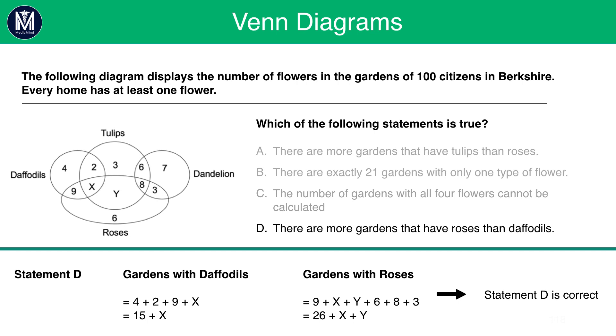Let's just check if it is the case. We use the same logic. 4 plus 2 plus 9 plus X is 15 plus X. For roses, it's 26 plus X plus Y. Now, Y cannot be a negative number, meaning the answer is D. There are more gardens that have roses than daffodils. Now, here for B and C, I spotted straight away that those I could rule out straight away, but between A and D it wasn't that simple. That's just a matter of guessing and intuition. I could have easily worked out D first and saved time, but I happened to work out A then D. In the exam, just try and work out the simplest statements like B and C, and then those that are left over, just work through them in a methodical manner until you get to the correct answer.